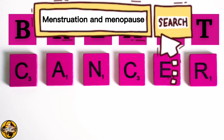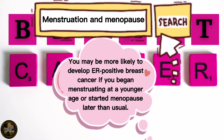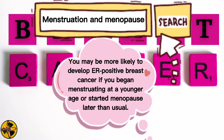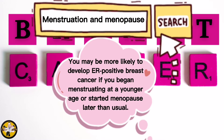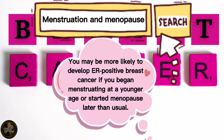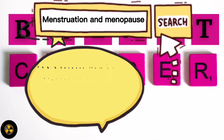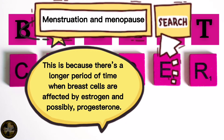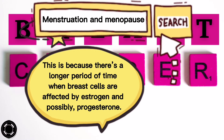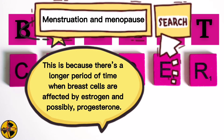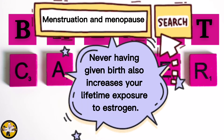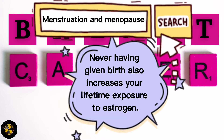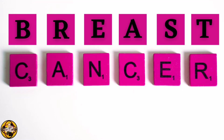Four, menstruation and menopause. You may be more likely to develop breast cancer if you begin menstruating at a younger age or started menopause later than usual. This is because there's a longer period of time when breast cells are affected by estrogen and possibly progesterone. Never having given birth also increases your lifetime exposure to estrogen.